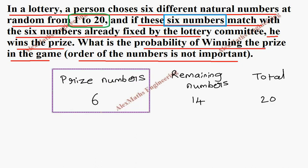...should come from these six numbers. So let's write: probability of prize equals - from the six we choose six numbers, so 6C6, then total selection is from the total 20 we choose six, so 20C6.